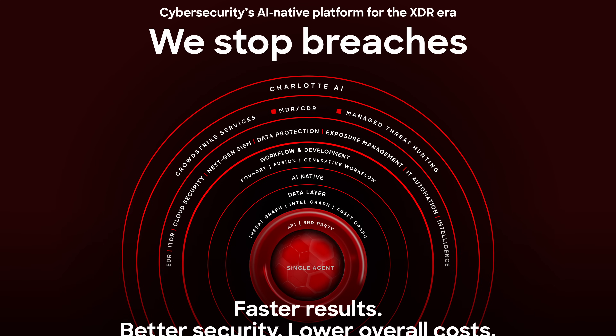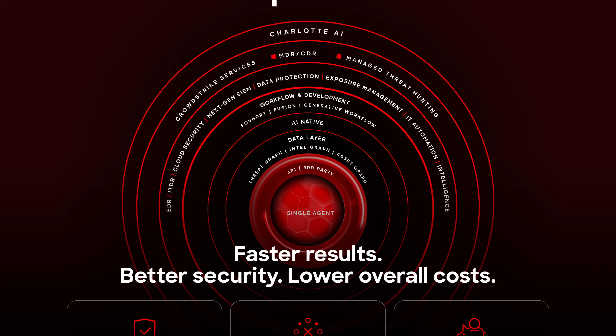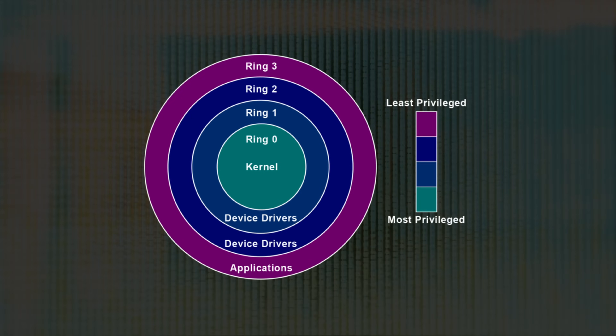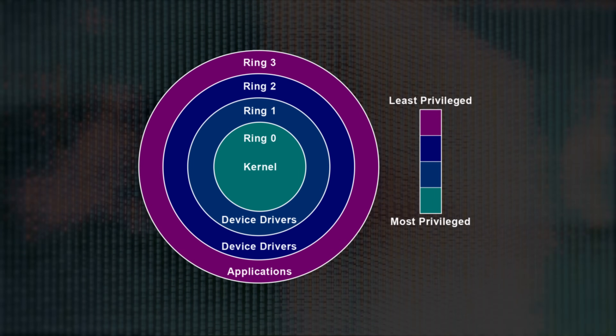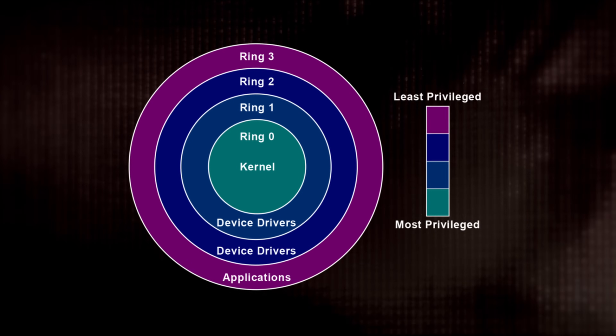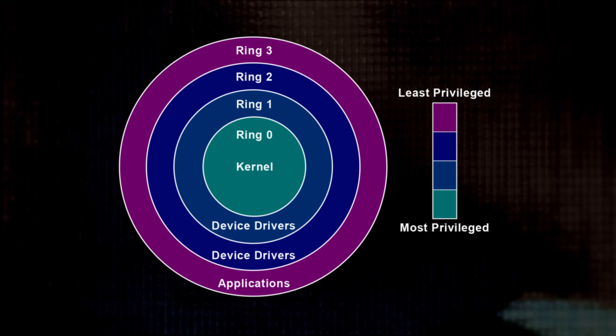CrowdStrike markets their Falcon Sensor software as a proactive solution against malicious programs — malware and unauthorized access. The problem arose because Falcon Sensor is installed at the kernel level. It's actually a kernel mode driver, and it means that the program has nearly complete, unfettered access to your system. But it also means that if the program crashes, it'll take the entire computer with it. And that's what happened last week when CrowdStrike pushed an update to their malicious definition file, and it basically put 8.5 million devices into an inescapable blue screen of death loop.